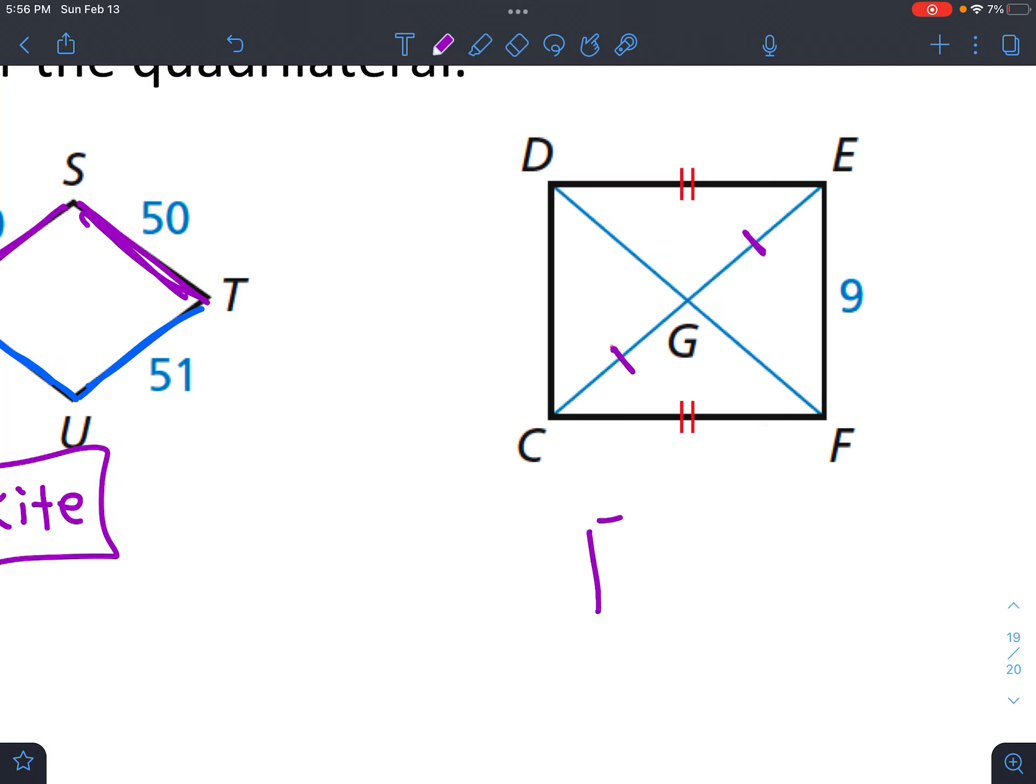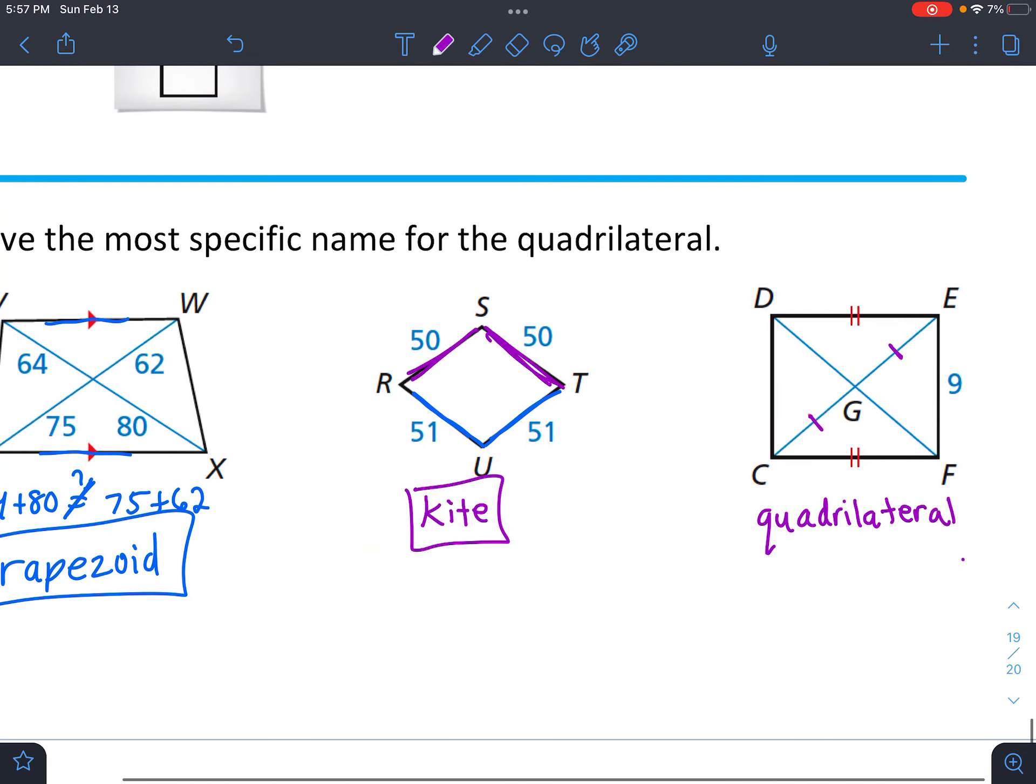So theoretically it could be slanted a little bit, right? So it could look kind of like that, but we also don't know that it could look kind of like that. I'm thinking that this one's just a generic quadrilateral. It has lots of markings, but not enough markings to quite make up any of our special quadrilaterals.